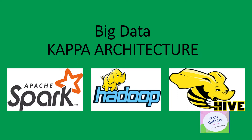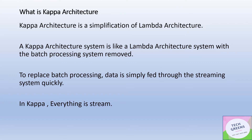Kappa architecture is a simplification of Lambda architecture. It is exactly the same as Lambda architecture except for the fact that there is no batch processing layer. The batch processing layer that was present in Lambda architecture is removed, and that is what defines Kappa architecture. The batch processing layer is replaced entirely by streaming, so there is now only one speed layer.